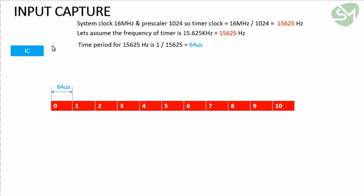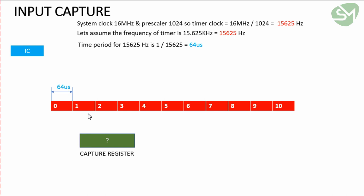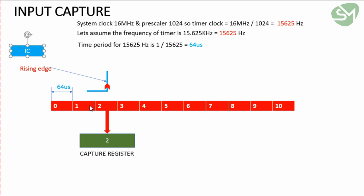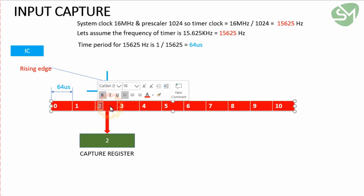We have an input capture pin in our microcontroller and a capture register for storing values. Whenever a rising edge pulse is given to the input capture pin, the corresponding timer count value at that moment — here you can see the timer count value is 2 — will be stored in the capture register.